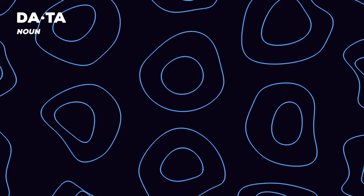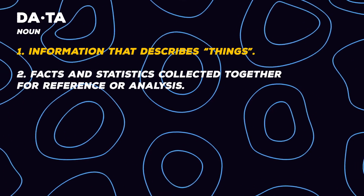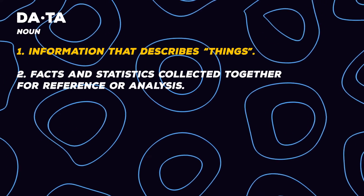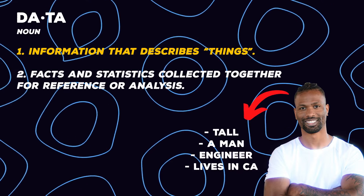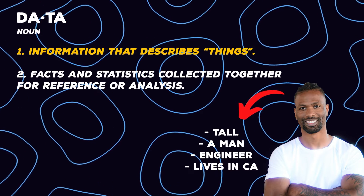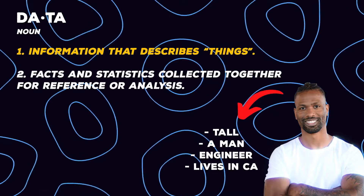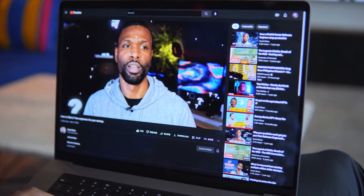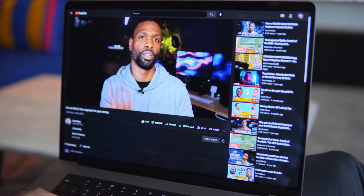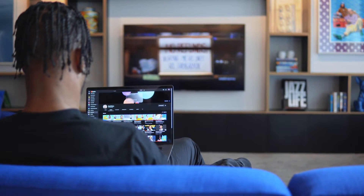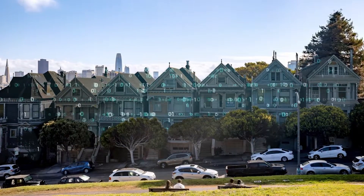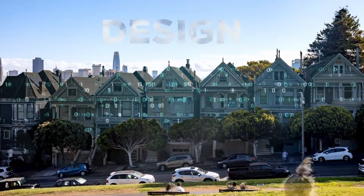An app also has something called data. Data is really just information that describes things — they're like traits. For instance, a trait for me might be that I'm tall, I'm a man, I'm an engineer, I live in California. Those are all traits — that is my data. Right now you're watching this video on YouTube. YouTube sees you represented as just data: your account, your viewing habits, the device you're on, your location, and all your settings — all of that is the data that describes you.